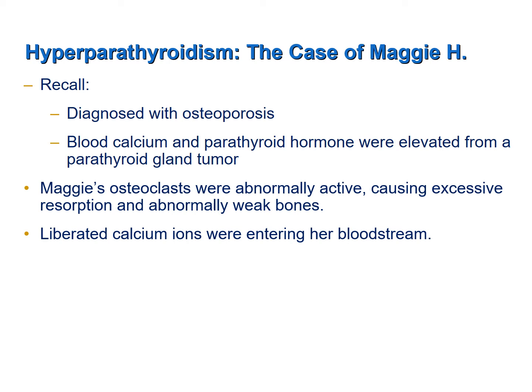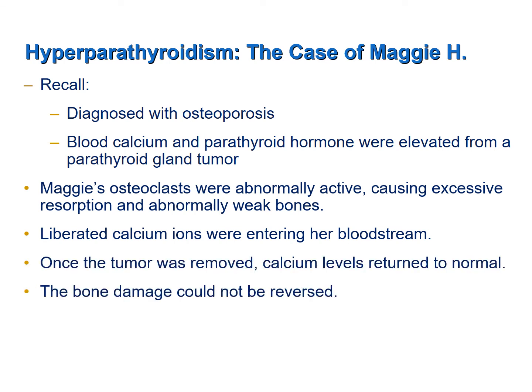The elevated parathyroid hormone was also responsible for elevated blood calcium because the osteoclasts were resorbing bone and releasing calcium into the blood, while the parathyroid hormone was also preventing the kidneys from excreting the calcium, causing an elevation in blood calcium levels. Once the tumor was removed, calcium levels returned to normal and her muscle weakness resolved. The bone damage, however, could not be reversed — once you lose bone density, it is very difficult to reverse it, which is why it is so important prior to menopause to maximize bone density.